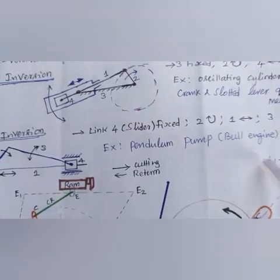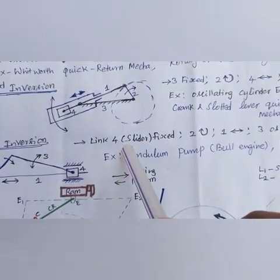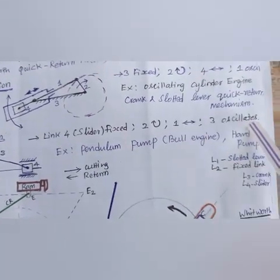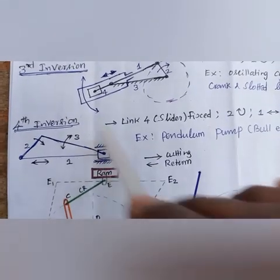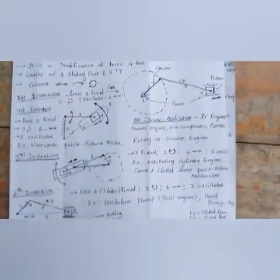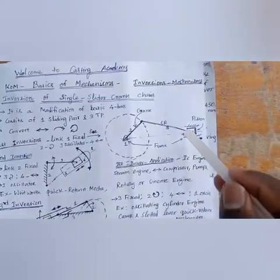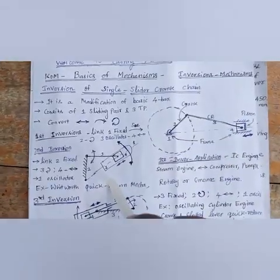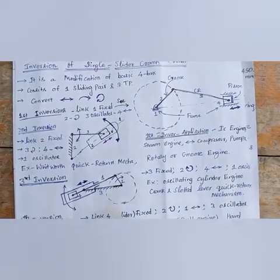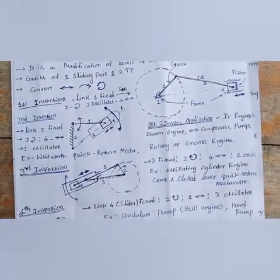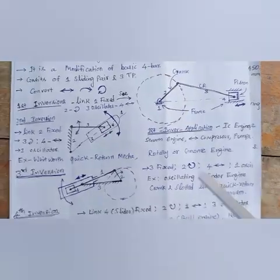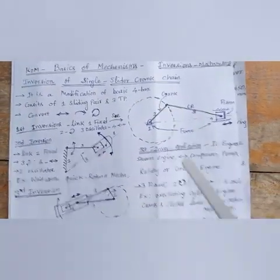Fourth inversion — the pendulum pump or bull engine: link four (the slider) is fixed, link two rotates, link one reciprocates, and link three oscillates. Summary: first inversion — link one fixed; second inversion — link two fixed; third inversion — link three fixed; fourth inversion — link four fixed. These are the practical applications discussed.